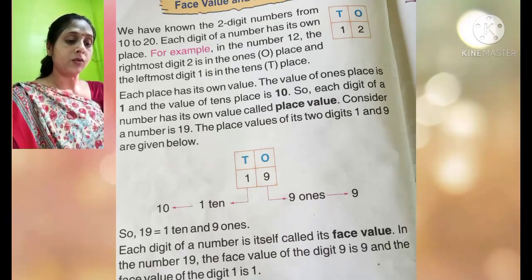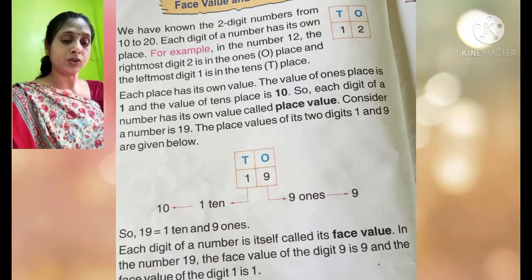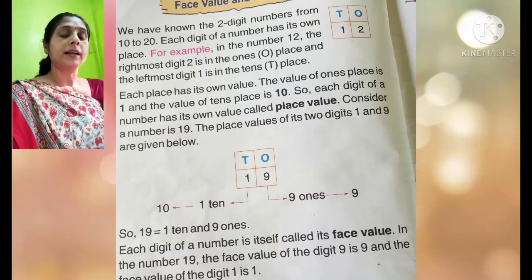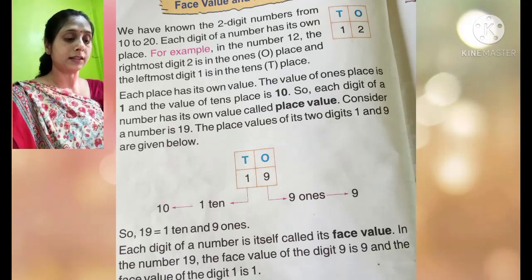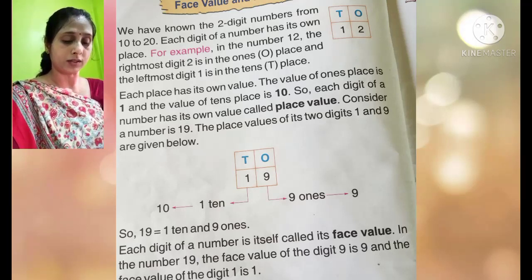The place value of its two digits 1 and 9 are given below. Because 1 is at the 10's position, the value of 1 is 10. 9 is at the 1's position, so the value of 9 is 9. 9 ones is equal to 9. So 19 is equal to 1 ten and 9 ones.